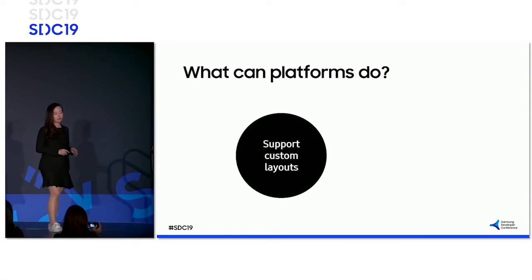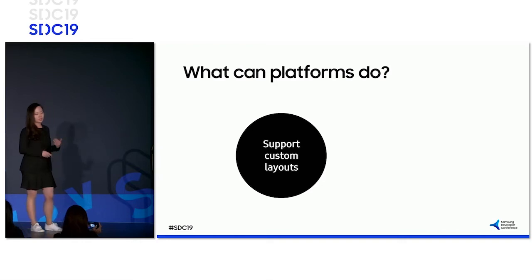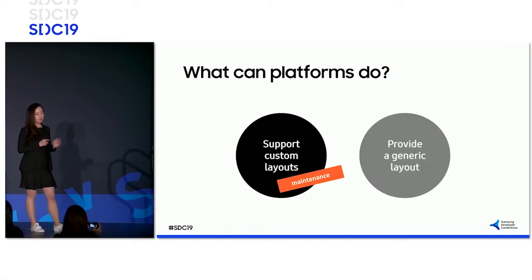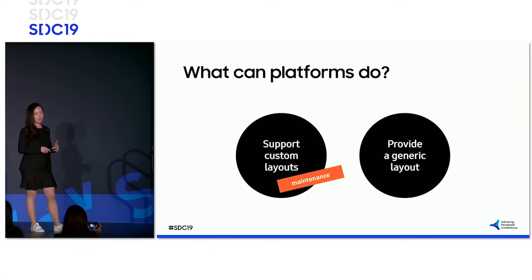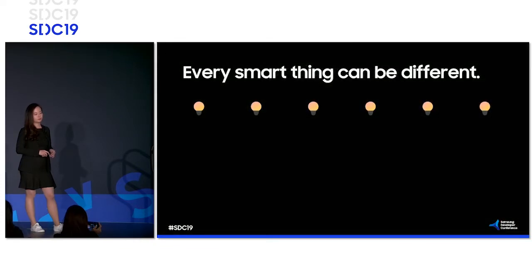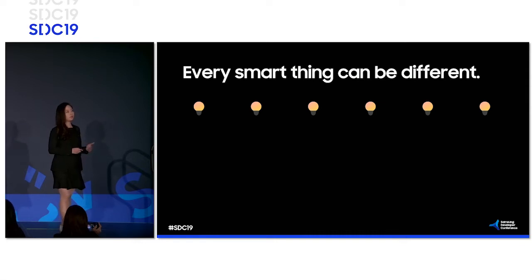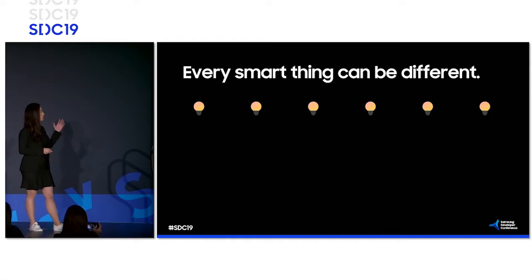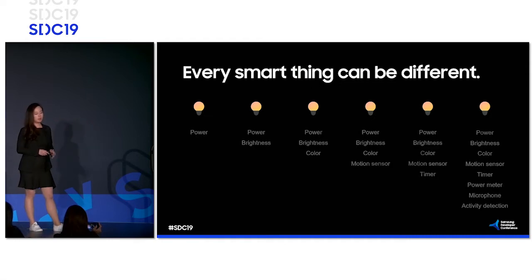A platform could support custom layouts and features per device, but maintenance for that would be quite a nightmare. It is more feasible for a platform to provide a generic set of common features per device type, but even that has its own issues. Every single smart thing can be different, and it should be. Even within the same device type — light bulbs, for example — the list of features can be very different.